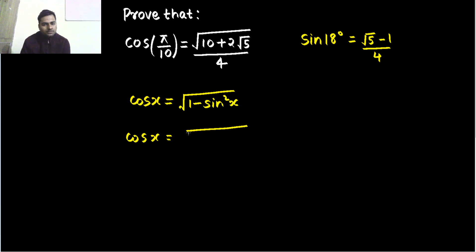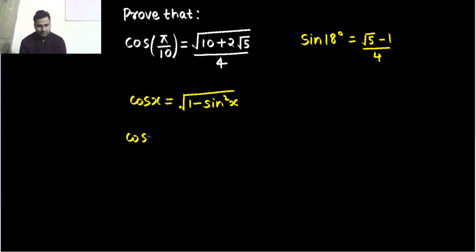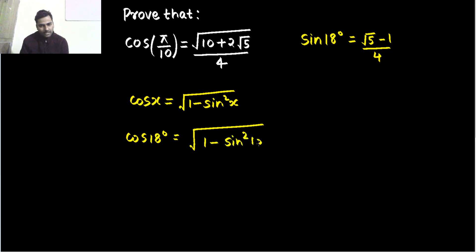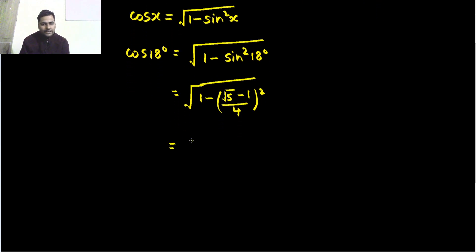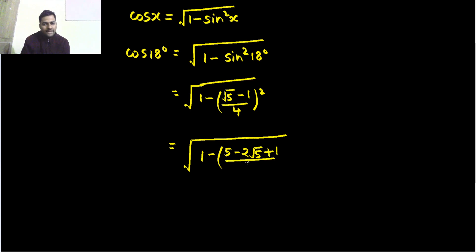So, cos x will be equal to — in order to find cos 18 degree value, that will be equal to under root 1 minus sin square 18 degree. The sin 18 value is under root 5 minus 1 divided by 4. Expanding the square: root 5 squared is 5, minus 2 into a into b, giving us 2 root 5, plus 1, all divided by 16.